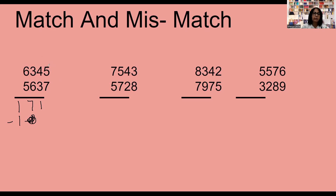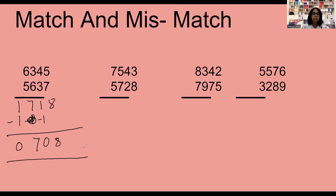It is a mismatch number, so write minus 1 here, not there. Complement of 7 is 3, and 3 plus 5 is 8. Now: 1 minus 1 is 0, then 7, then 1 minus 1 is 0, then 8. So the answer is 7, 0, 8.